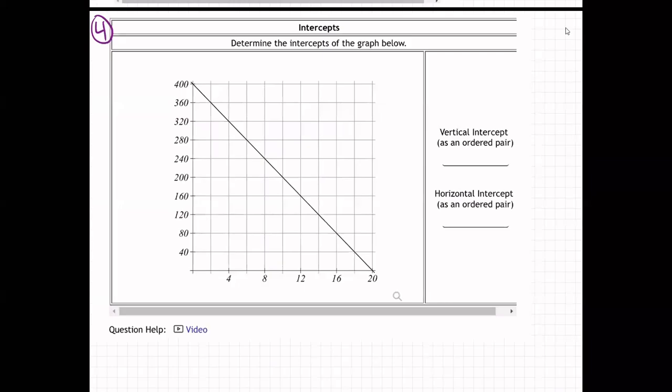Okay, so on this one, they're giving us a graph. We get this line graph right here, and they're saying find the vertical intercept as an ordered pair.